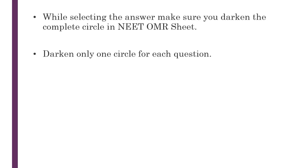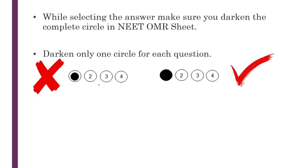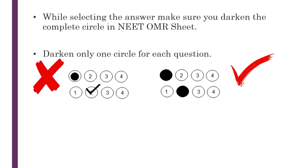Here are some errors you might make when filling the OMR sheet. First, you need to fill the entire circle — the entire bubble should be filled. Do not half fill it or just mark it. Also, do not tick mark or partially mark the correct answer; you need to fill the entire bubble, otherwise the computer won't be able to read the answer.